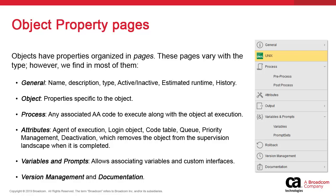Each time you add a new object or edit an existing one, you see a menu on the left side of the interface. This menu is structured in pages, which vary based on the object type. The following shows the pages that you might see in a Jobs object.